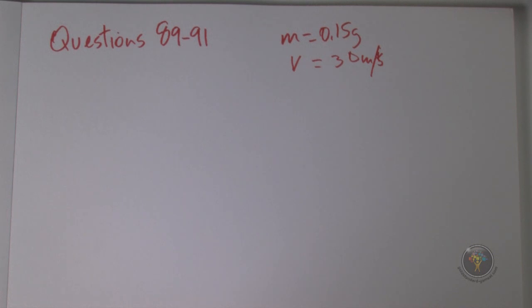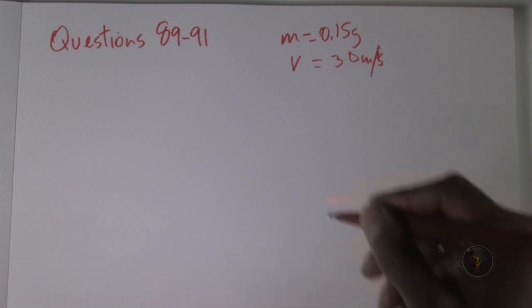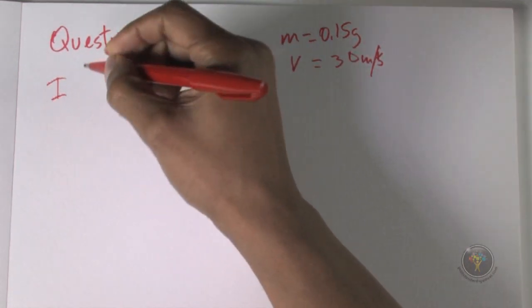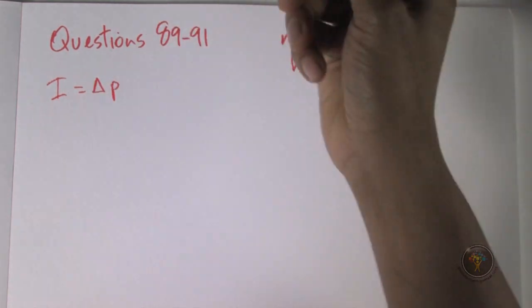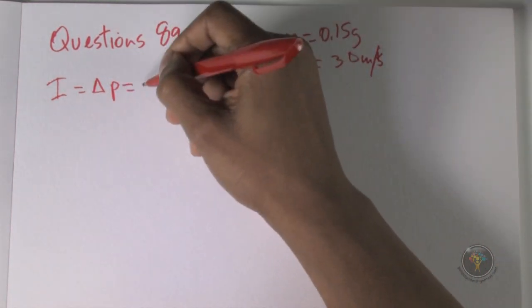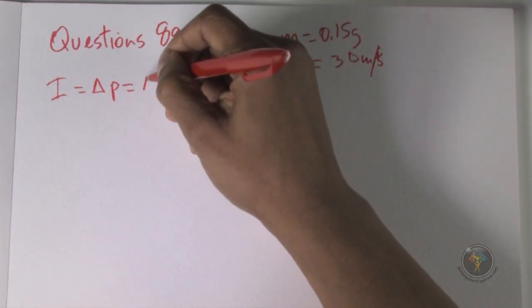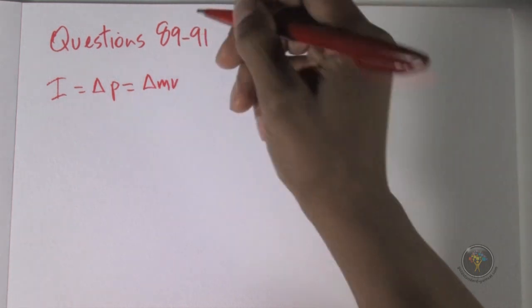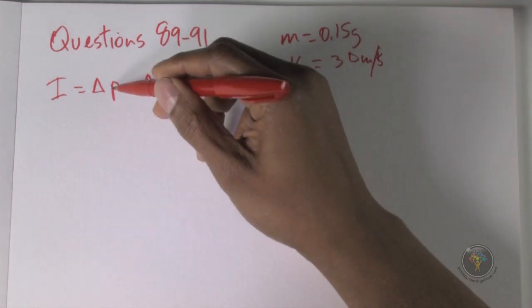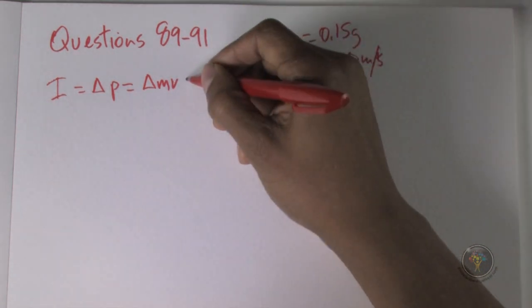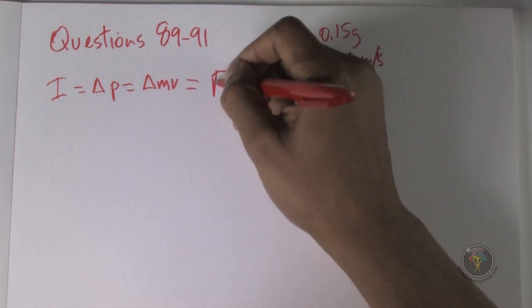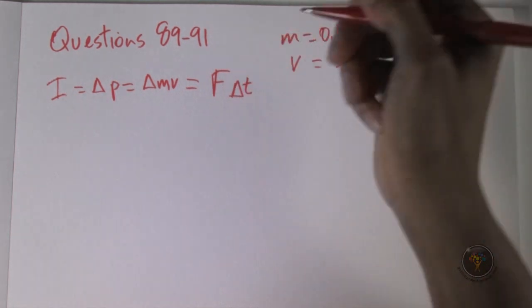There are no external forces. The equation for impulse is usually written with the letter I for impulse, but you can also write it as delta p or delta mv, because impulse is the instantaneous change in momentum. This is equal to force times delta t.